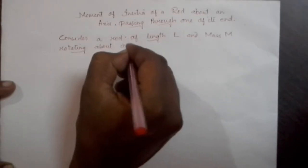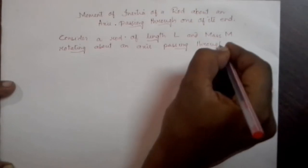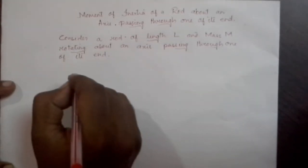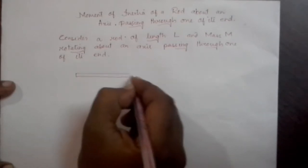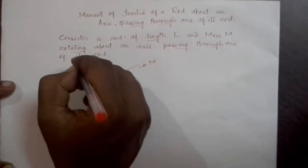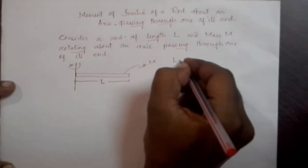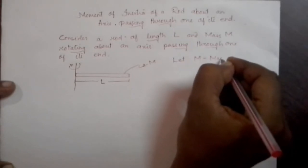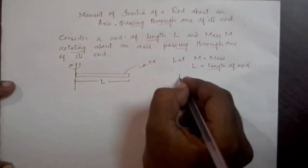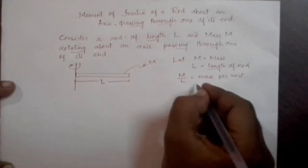Let us say we have this rod whose mass is M, length is L. And let us say this is the axis of rotation about which the body is rotating. So M is equal to mass, L is equal to length of rod. And let M by L be equal to mass per unit length.